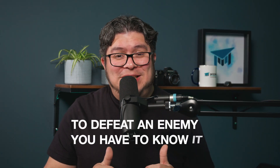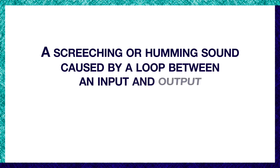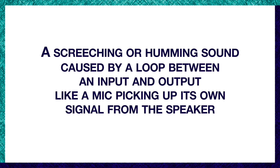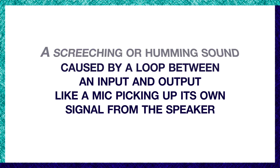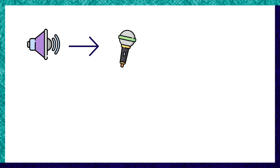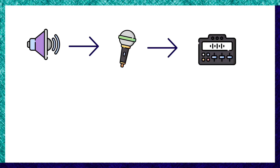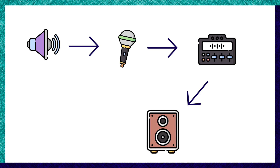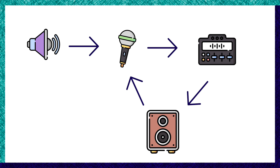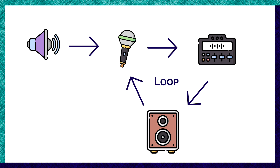That's why we call it an enemy. But before we get rid of it, you need to understand it. Technically, feedback is the screeching or humming sound caused by a loop between an input and an output — like a mic picking up its own signal from the speaker. Sound goes into the microphone, the microphone takes it to the mixer, the mixer takes it to the speakers, part of that sound goes back to the microphone, creating the loop. The result of that loop is feedback.